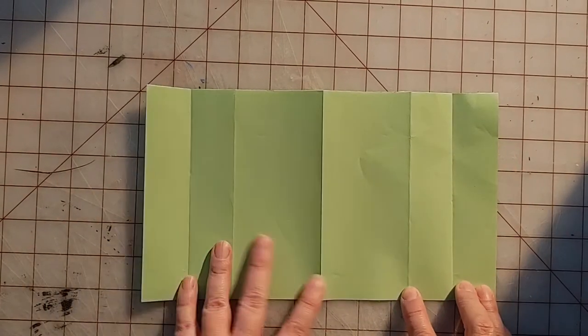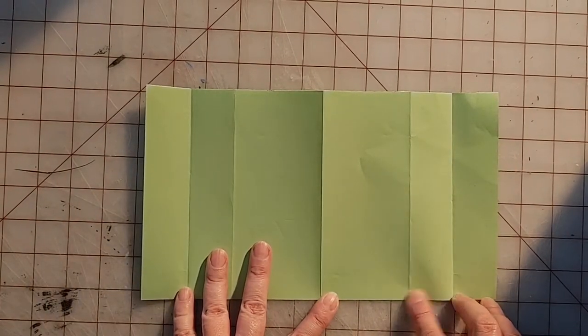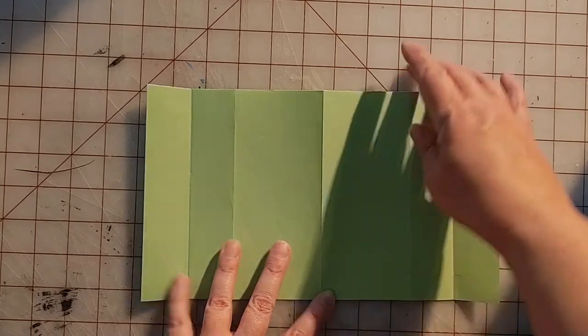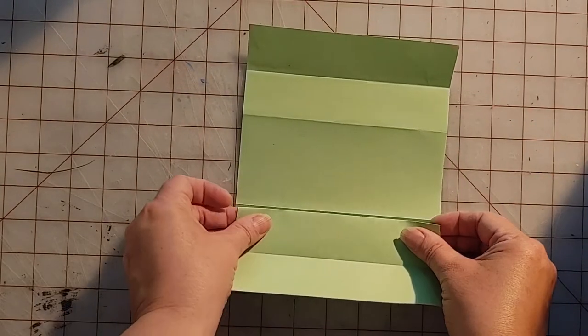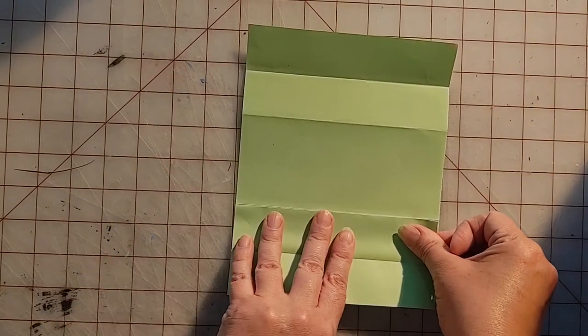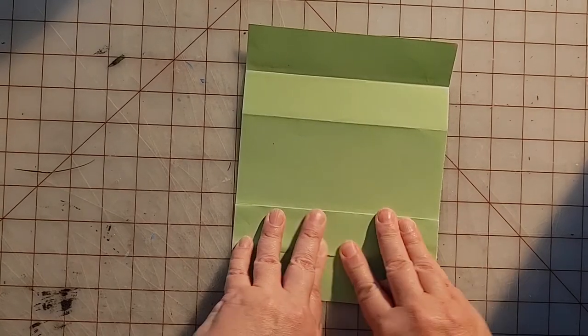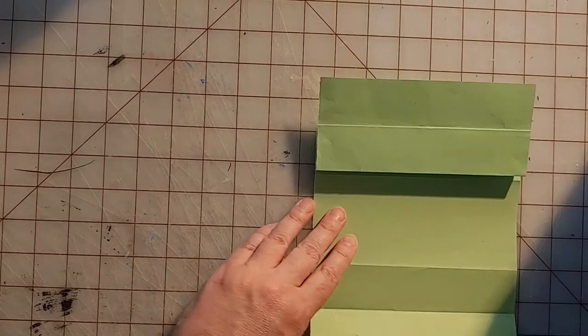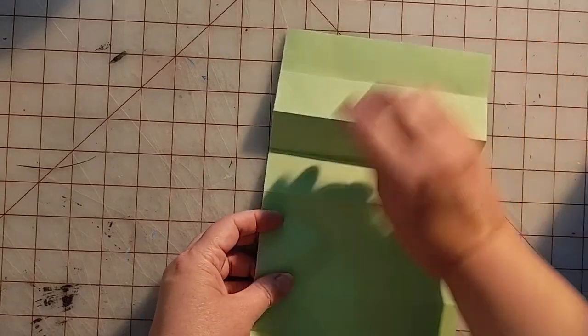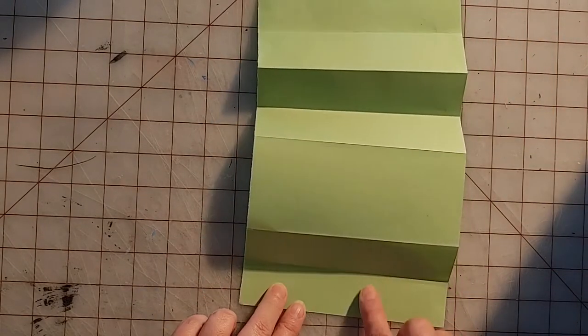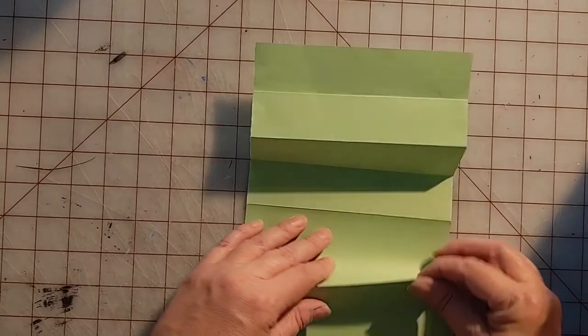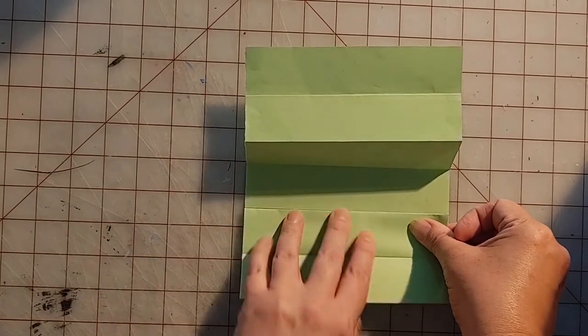And the last thing I'm going to do is take what is now my second fold, one, two, and fold it to the middle. I'm going to do that again on the other side, so one, two folds, folding that to the middle.